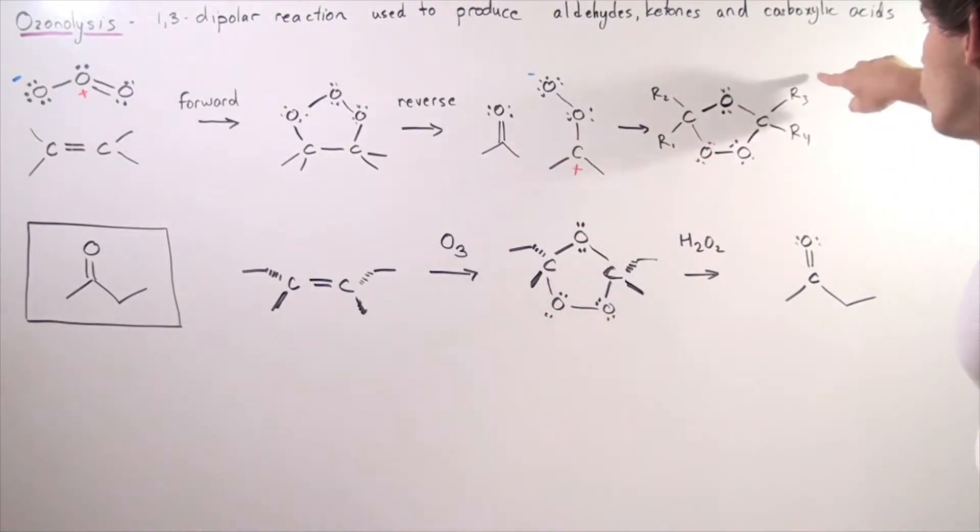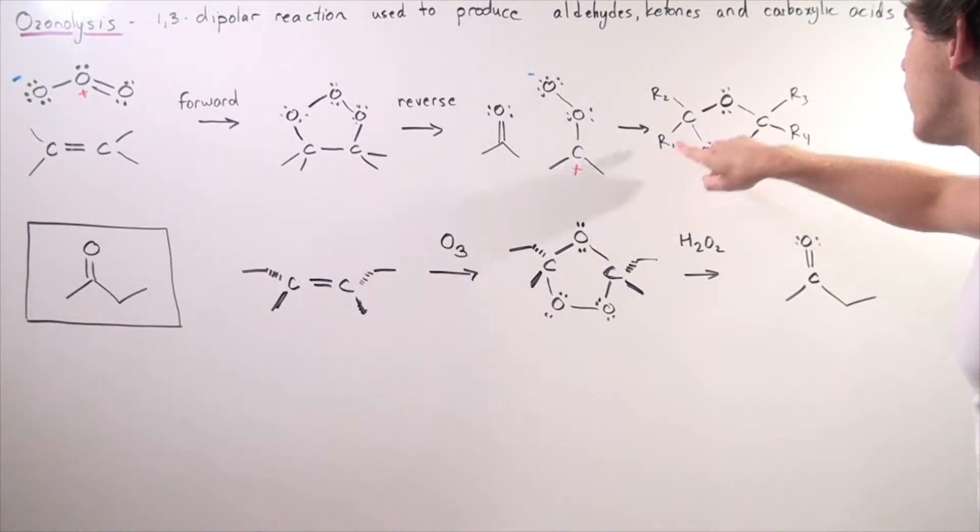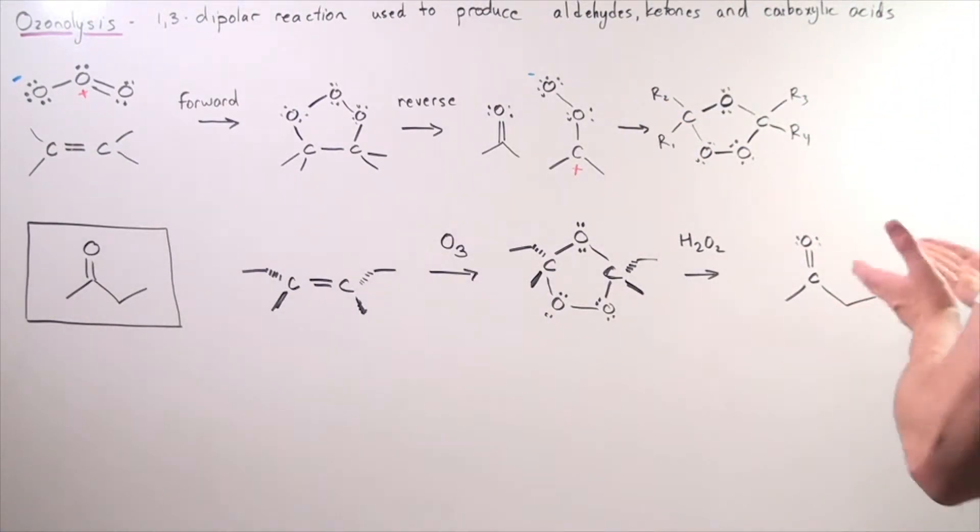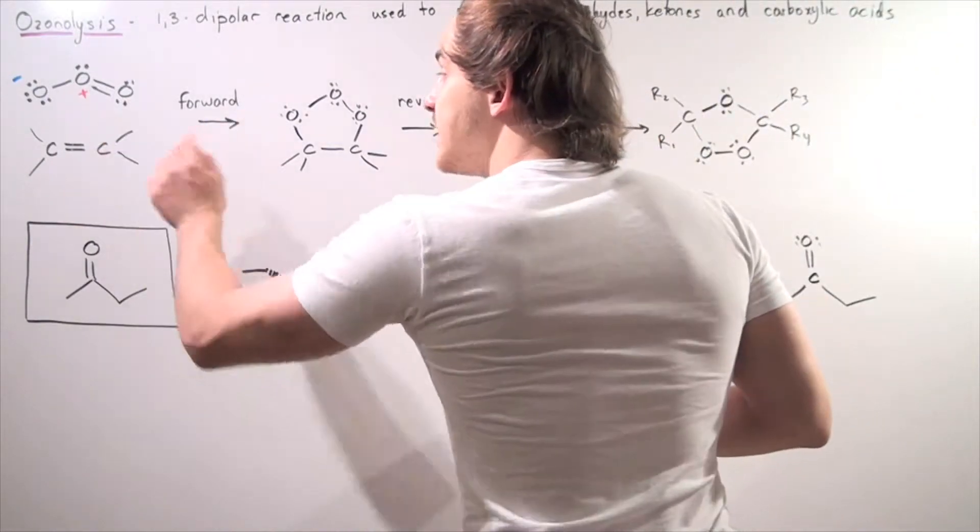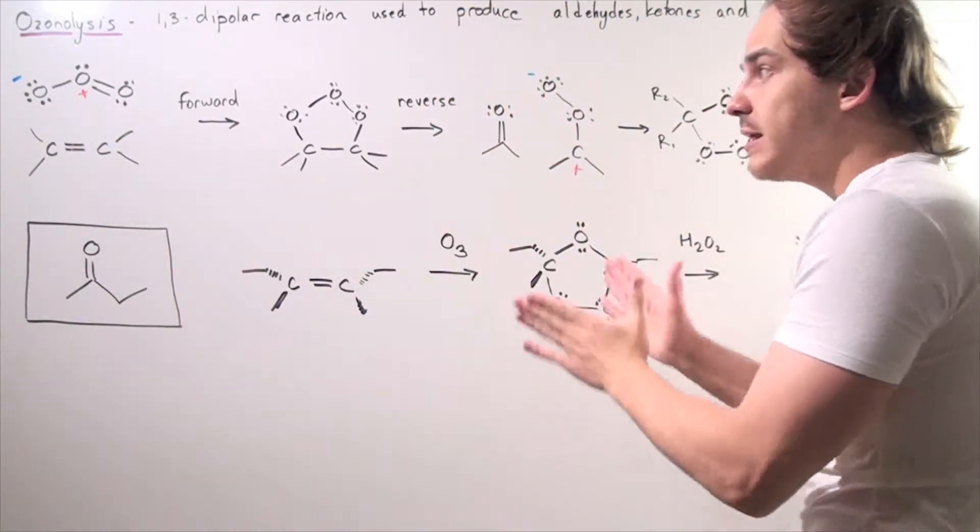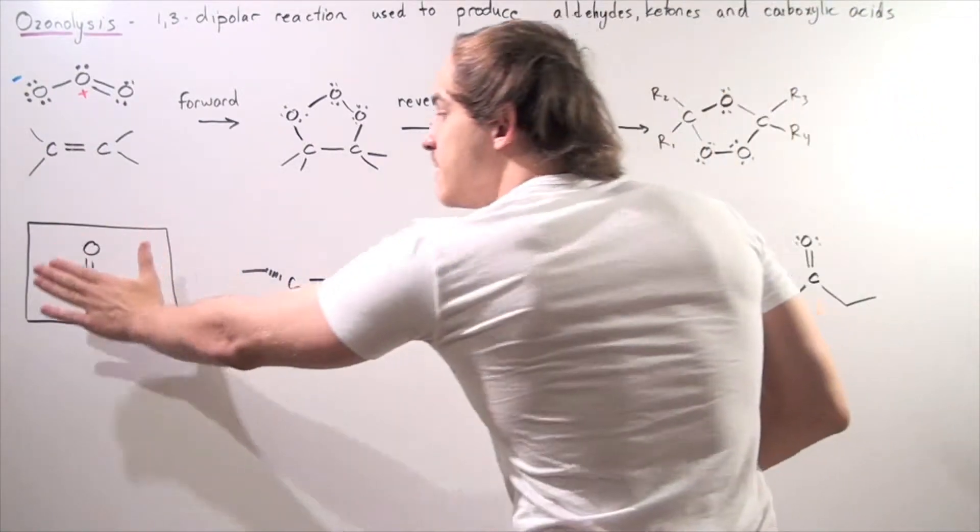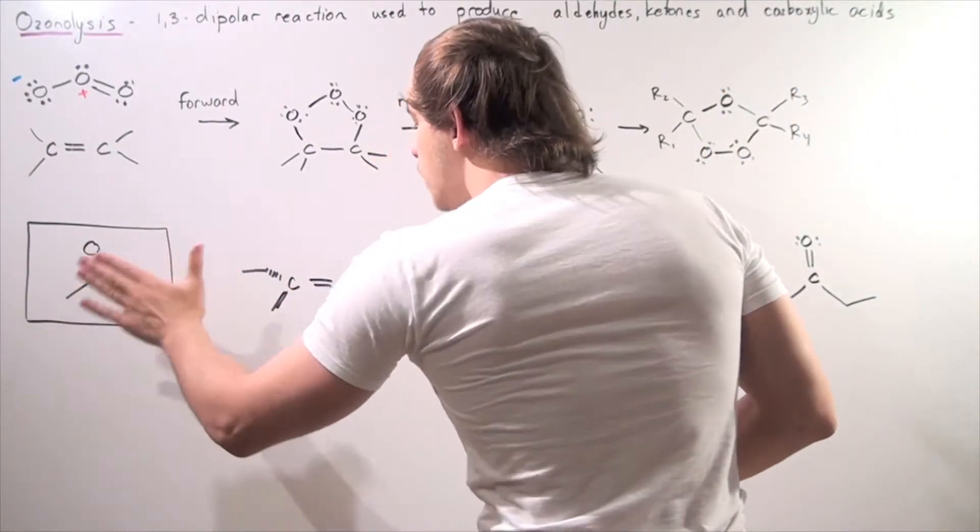Now, these four groups are simply four different side chain groups. And depending on what these guys are, we can either form our aldehyde, ketone, or carboxylic acid. So, what type of alkene should we use in the beginning to form this ketone, this final product?